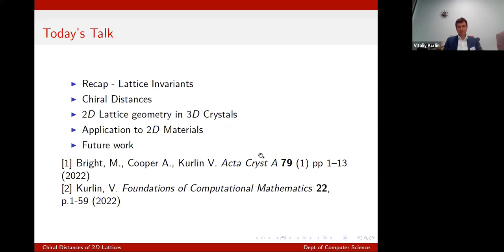For those who might have been here last year, we've begun to develop the invariants. I'm going to go through that fairly quickly and talk about the extension to chiral distances — essentially these continuous measures of symmetry or asymmetry.